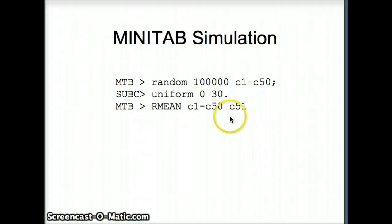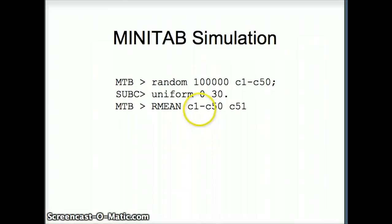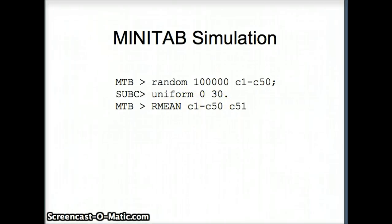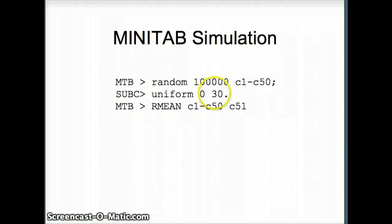Here's our simulation. We're going to put 100,000 numbers in C1 through C50. Each one of those numbers comes from a uniform distribution from 0 through 30. Then we're going to take the average of the entire row — the row mean of C1 through C50 — and those averages will be stored in C51. So C51 is a column of averages, while the other columns are uniform 0-30 numbers.